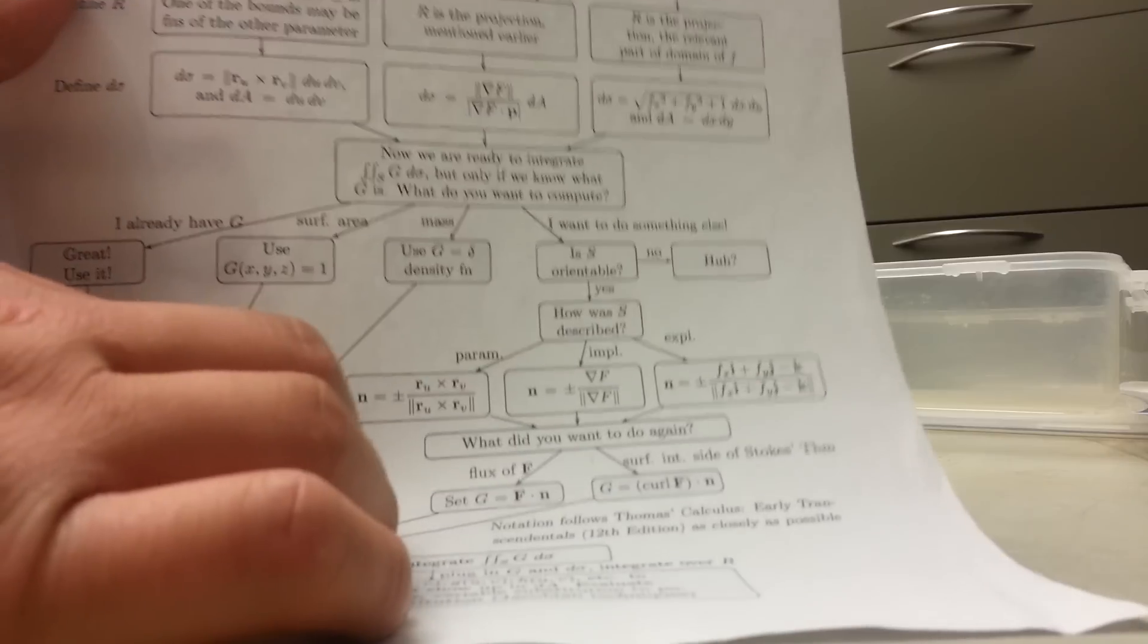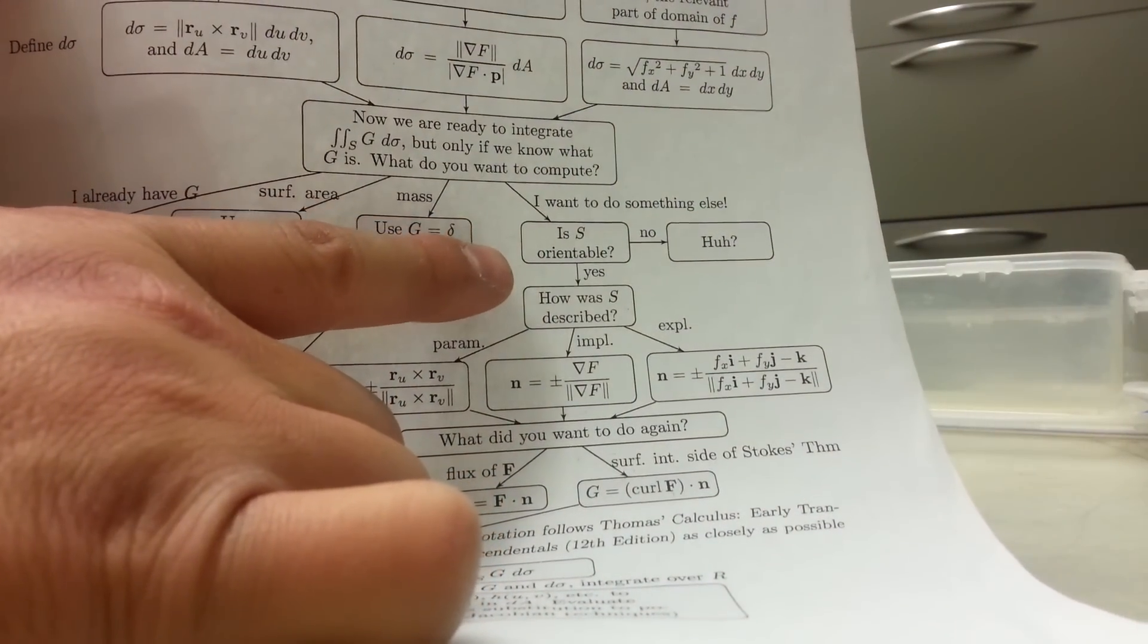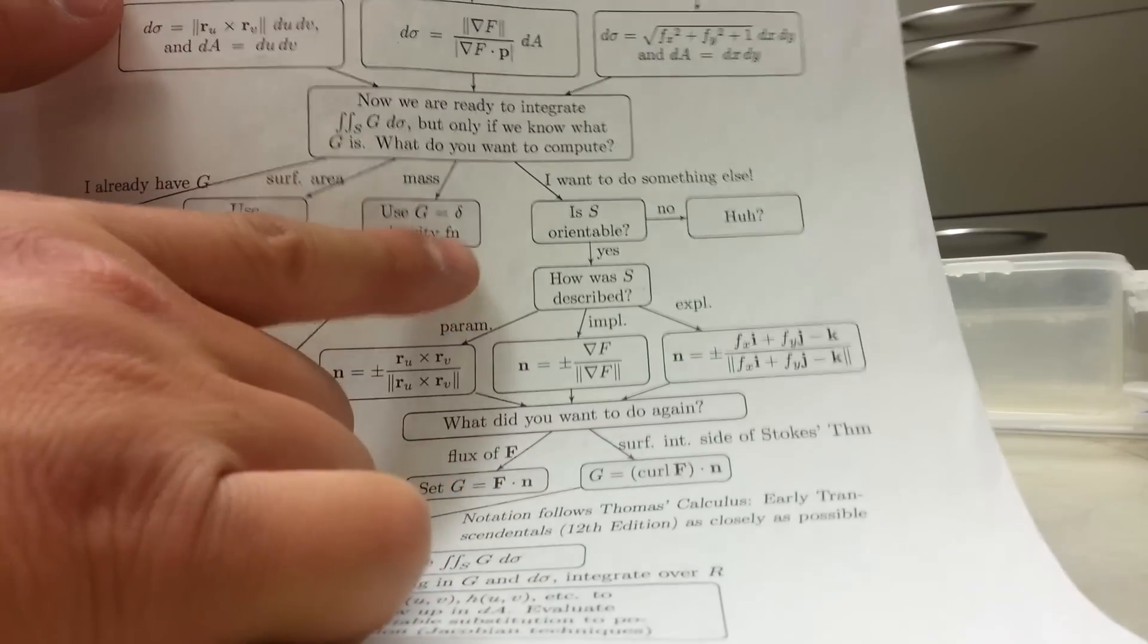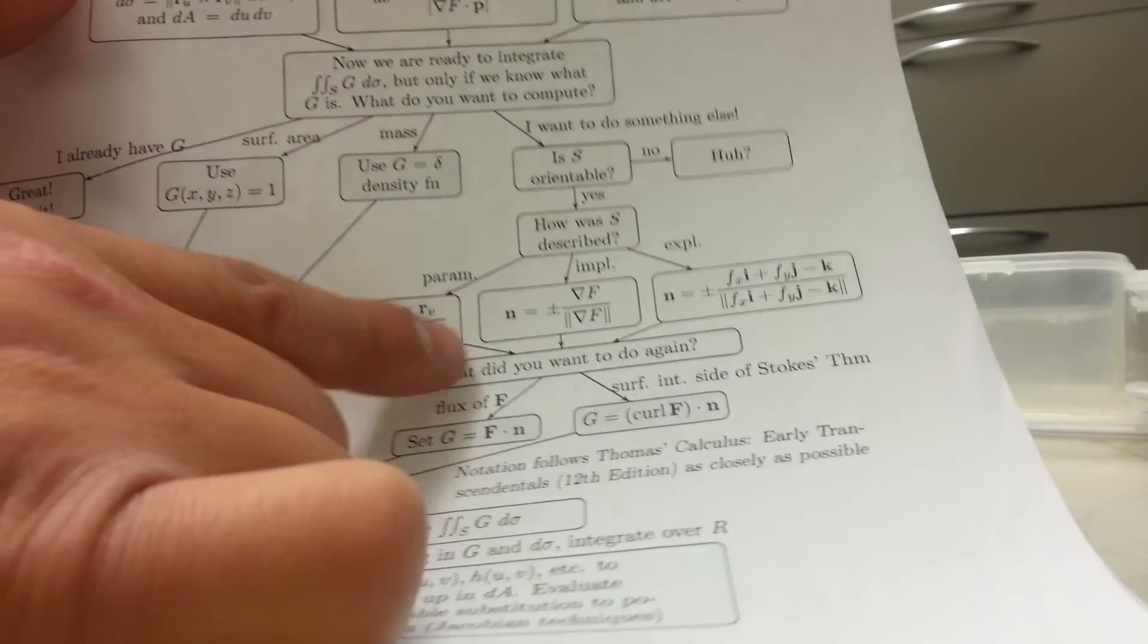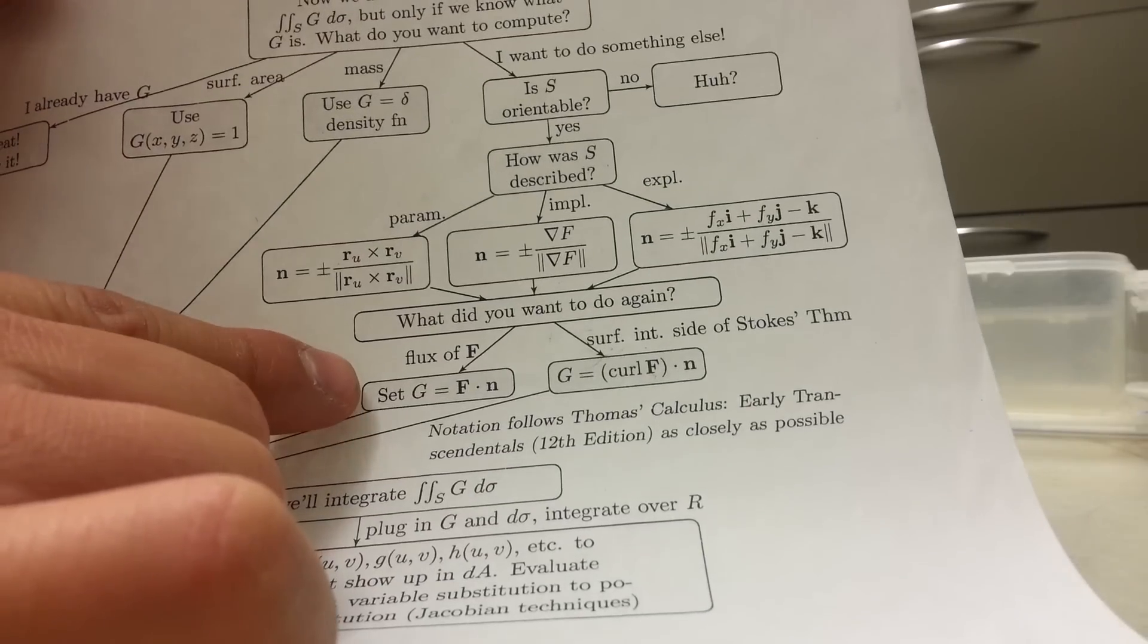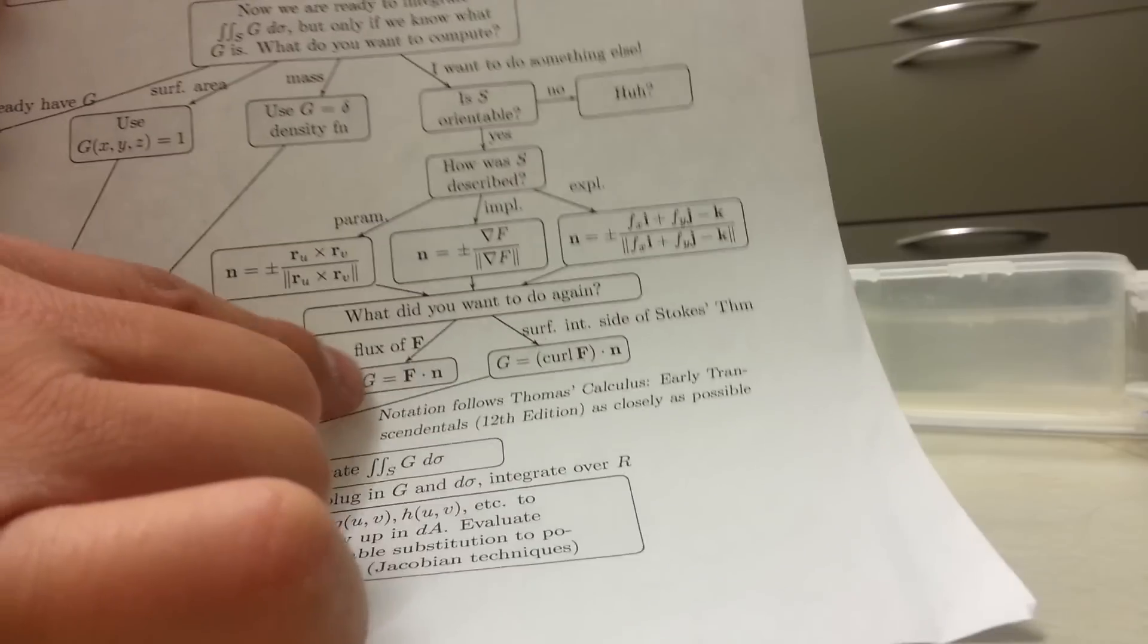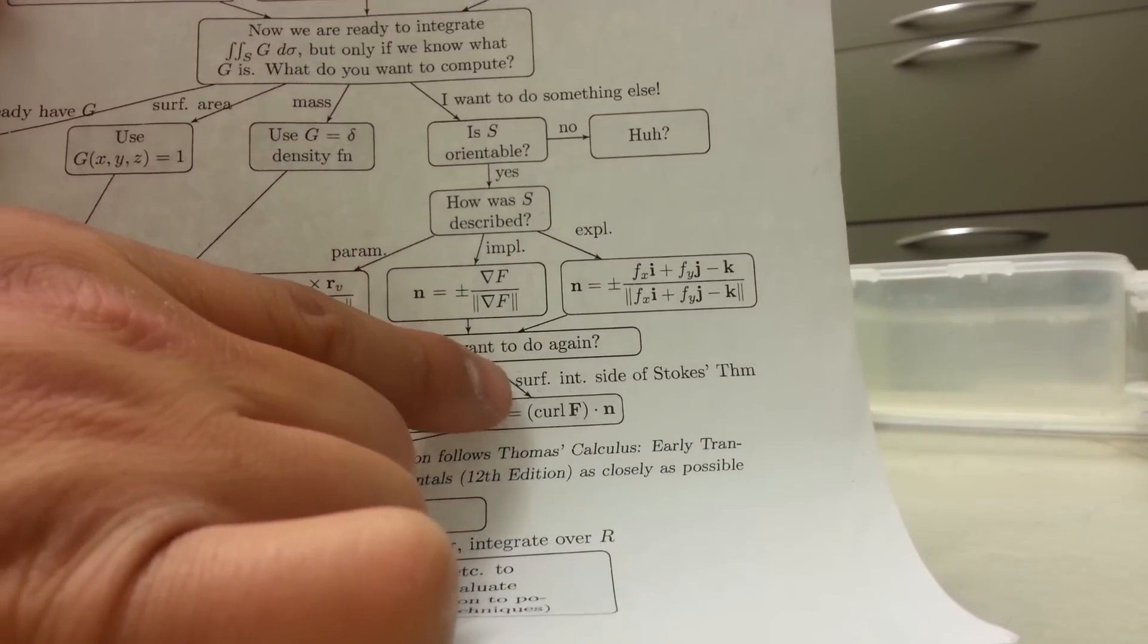But what I'd like to do is talk about surface integrals that you can compute when you have an orientable surface S. And when your surface S is orientable, then there's two kinds of surface integrals that you can compute now that you could not compute before. So one of these things is you can compute the flux of S, and the other thing is you can look at Stokes' theorem.